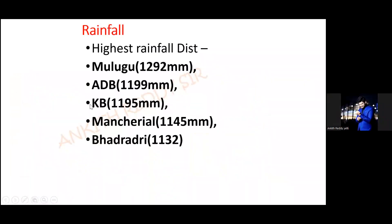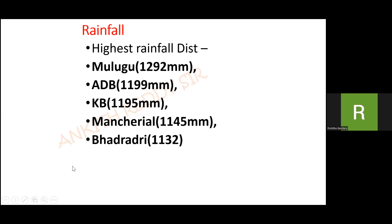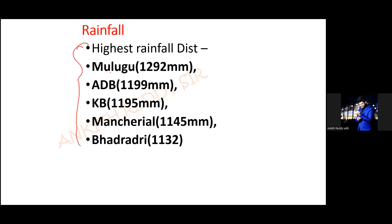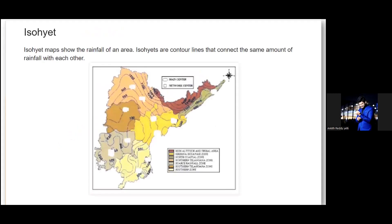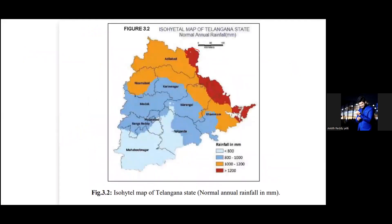We were discussing the distribution of rainfall in Telangana. Maximum rainfall can be seen in the districts of Mollugu, Adilabad, Kumrami, Masyapabad, Manchiriyal, and Badradi Kotabudan — that is the eastern part of Telangana. Here we have Asifabad, Adilabad, Jeshangar, Papali, Mollugu, and Badradi Kotabudan — this part.